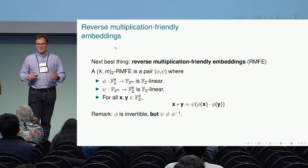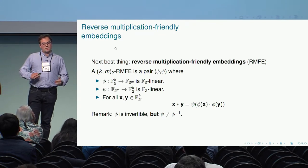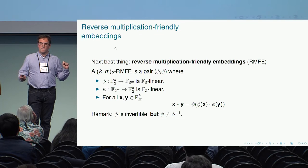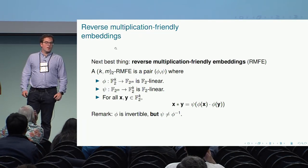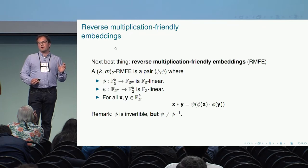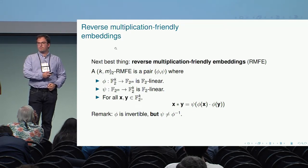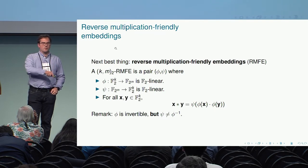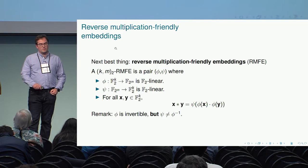The next best thing we can think of is using what we call reverse multiplication-friendly embeddings. This is a pair of functions: one function φ takes vectors over F2 and outputs an element of a field of degree m, and the other map ψ goes the other way. The condition is that to compute the coordinate-wise products of two vectors X and Y, we can first apply φ, multiply as field elements, and then apply ψ back. Note that φ is invertible—which is important for our protocol—but φ and ψ cannot be inverses of each other since the two structures are not isomorphic.